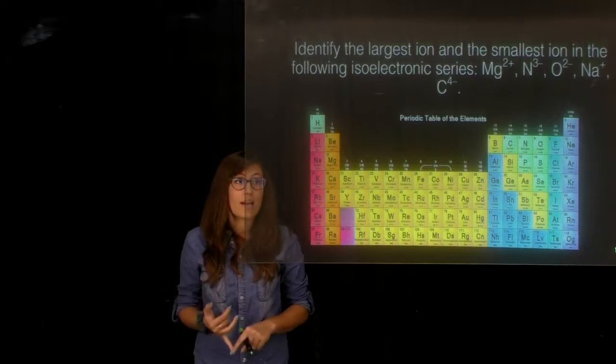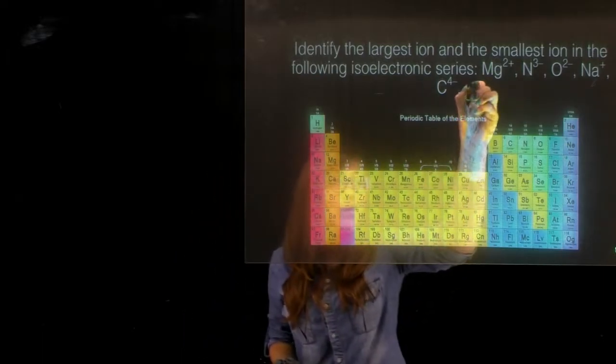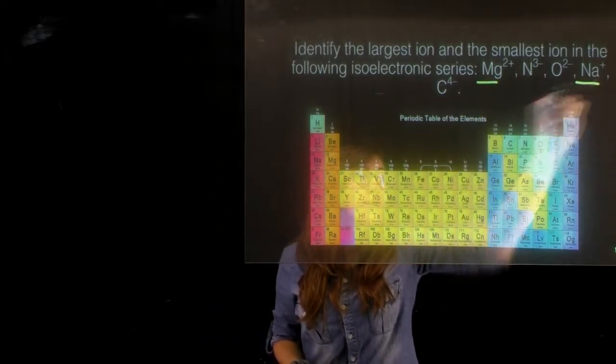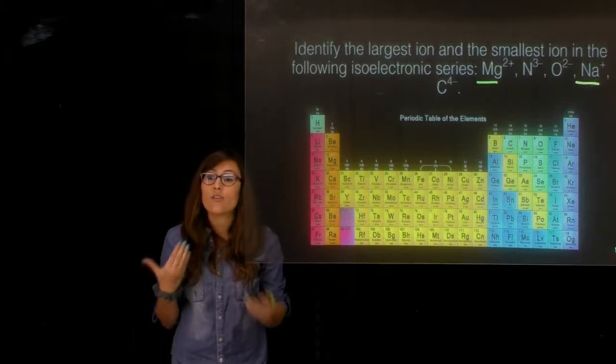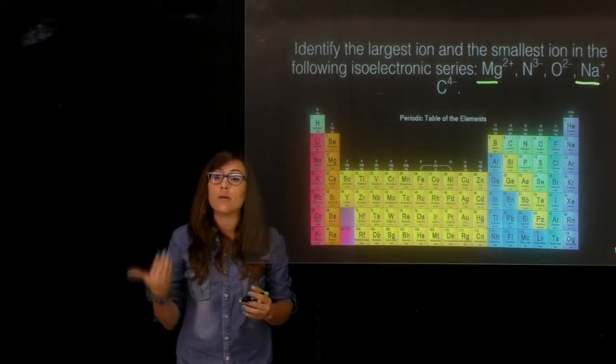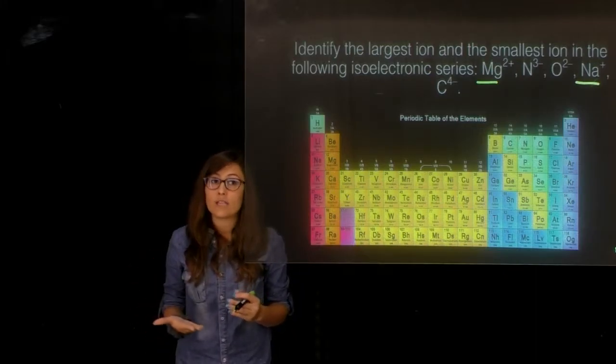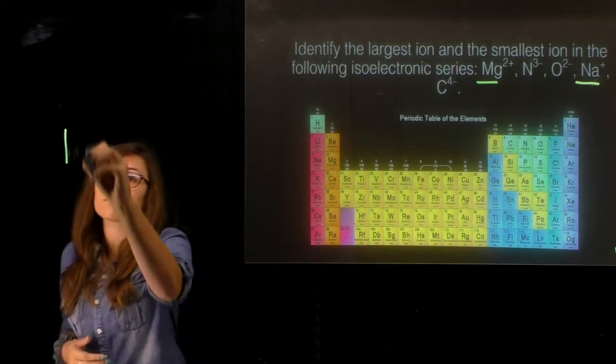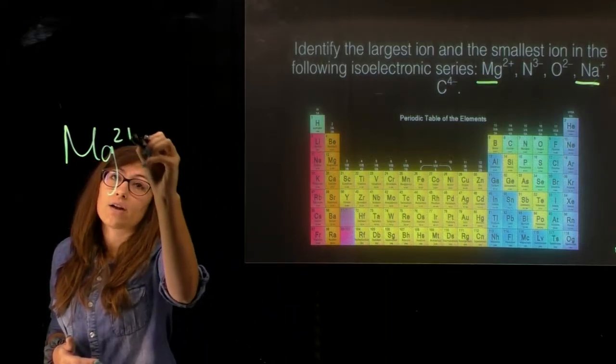We're looking primarily for a cation. Let's go ahead and identify our cations. We have magnesium 2 plus and sodium plus. Out of these two, magnesium is losing the largest amount of electrons, so magnesium is going to be the smallest out of those two.